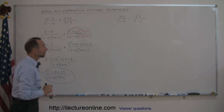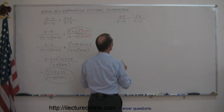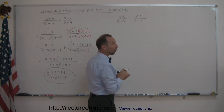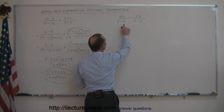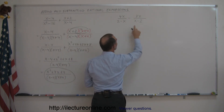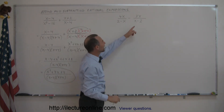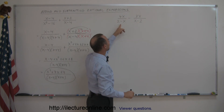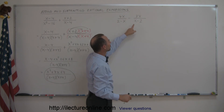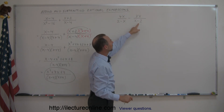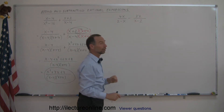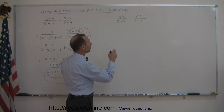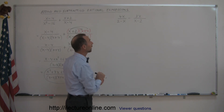Now let's look at our next example. At first sight, the denominators almost look the same — here you have 2 minus x, and there you have x minus 2. The question is, how can you make this denominator look like that denominator? If you multiply the denominator by negative 1, then this becomes negative x and that becomes plus 2, giving you the same thing. So the idea is to multiply the denominator by negative 1.